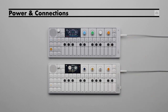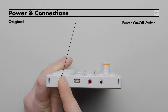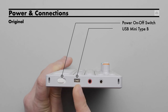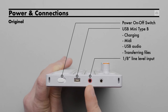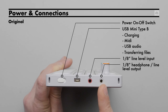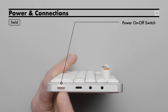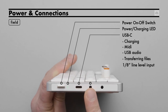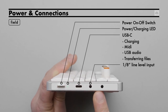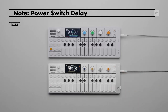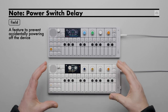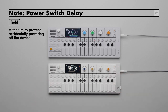OP-1's connections are on the right side of the unit. On the original, we have a power on/off switch, a USB Mini Type-B for charging, MIDI, USB audio, and transferring files. Next, there's an eighth-inch TRS line-level audio input, and finally an eighth-inch TRS headphone output that can also be a line-level output. On Field, there's an updated power switch, USB-C, an eighth-inch TRS line-level audio input, and an eighth-inch TRS headphone output that can also be a line-level output. Note: Field also has a built-in feature on the power switch to prevent accidentally turning off the device.